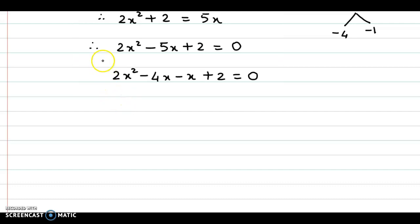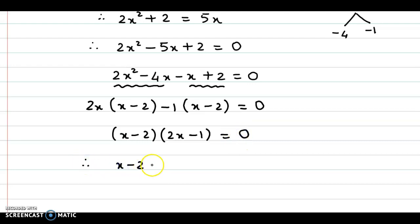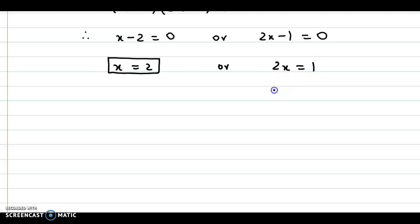Now from the first and second terms, taking 2X common, we get 2X into X minus 2. And taking minus 1 common from the third and fourth terms, we again get X minus 2 is equal to 0. So we have X minus 2 as the first factor and 2X minus 1 as the other factor, equal to 0. Therefore either X minus 2 is 0, giving X is equal to 2, or 2X minus 1 is equal to 0. So the required values of X are 2 and half.